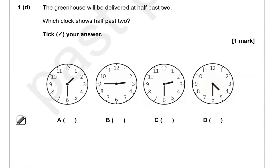The greenhouse will be delivered at half past 2. Which clock shows half past 2? The first one, A, is half past 1. B is quarter to 3. C is half past 2 — it's just past 2 o'clock. D is half past 4. So C is the only correct option.